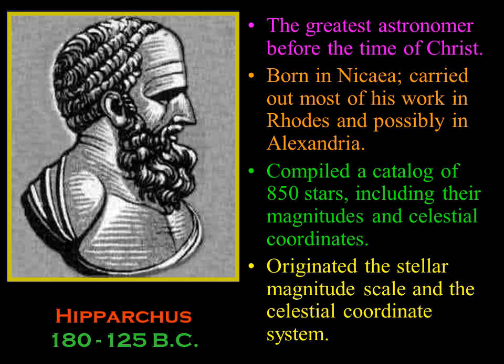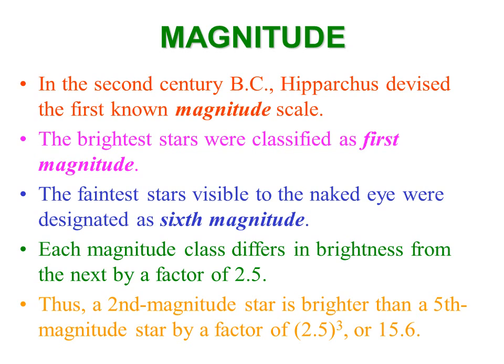Magnitude — brightness — is one of the most prominent aspects of a star. You look at stars and immediately see how bright or dim they are compared to others. In the 2nd century B.C., Hipparchus set up the first known magnitude scale. The brightest stars he classified as first magnitude, and the faintest stars visible to the unaided eye he called sixth magnitude. Each magnitude class is about 2.5 times as bright as the one just below it on the scale.